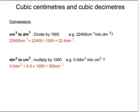A bit of practice with conversions. If you're converting from cubic centimetres to cubic decimetres, cubic decimetres are bigger things and therefore there are less of them, so you divide by 1,000. For example, converting 22,400 cm³ into dm³: divide by 1,000 to get 22.4 dm³. Whereas converting dm³ to cm³, you multiply by 1,000. So 0.5 dm³ × 1,000 = 500 cm³.